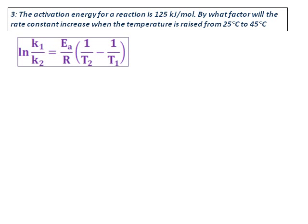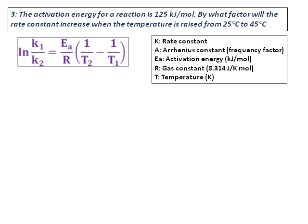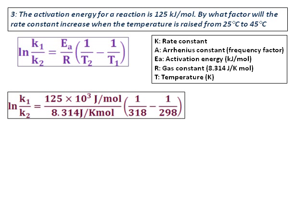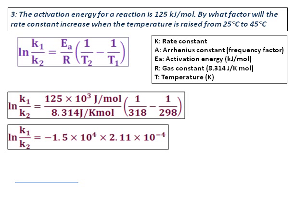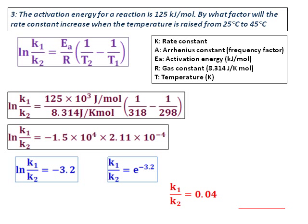Use the ln(k1/k2) equation with the two given temperatures. Ea is given, and we know R. Be careful with units—convert Ea to joules per mole. Get the ratio ln(k1/k2), then calculate k1/k2, which equals 0.04. Reversing it, the new rate constant is 25 times the initial rate constant with the temperature increase.